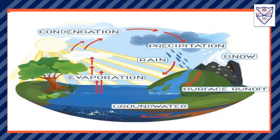Water is constantly in motion due to evaporation, condensation, and precipitation, and this causes the water cycle. So let's understand how the water cycle happens.